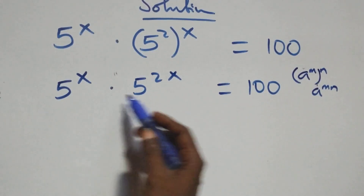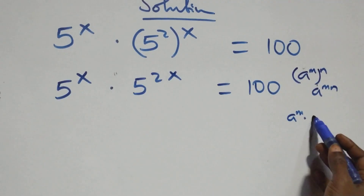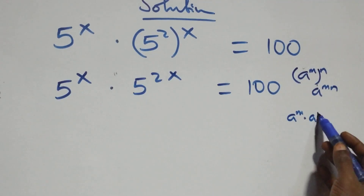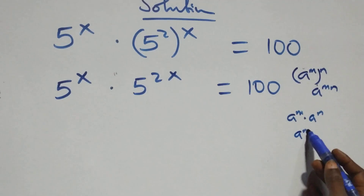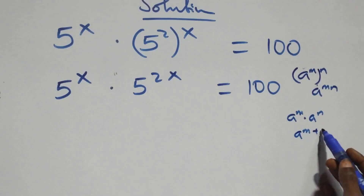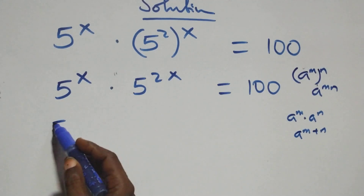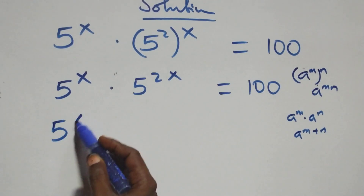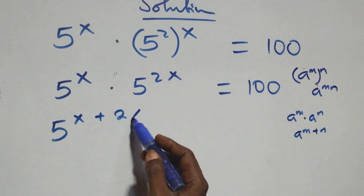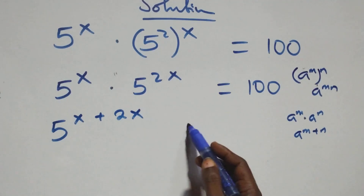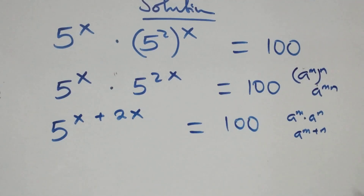This follows: when we have 5 raised to power x times 5 raised to power x, which is the same thing as 5 raised to power x plus 2x. At this point we write this as 5 raised to power x plus 2x equals 100.